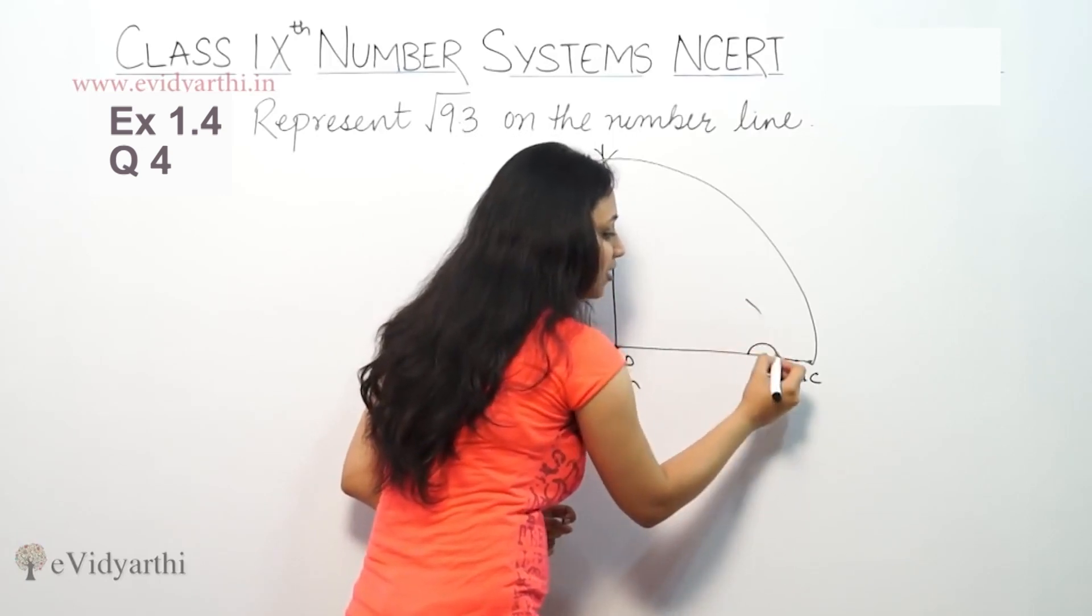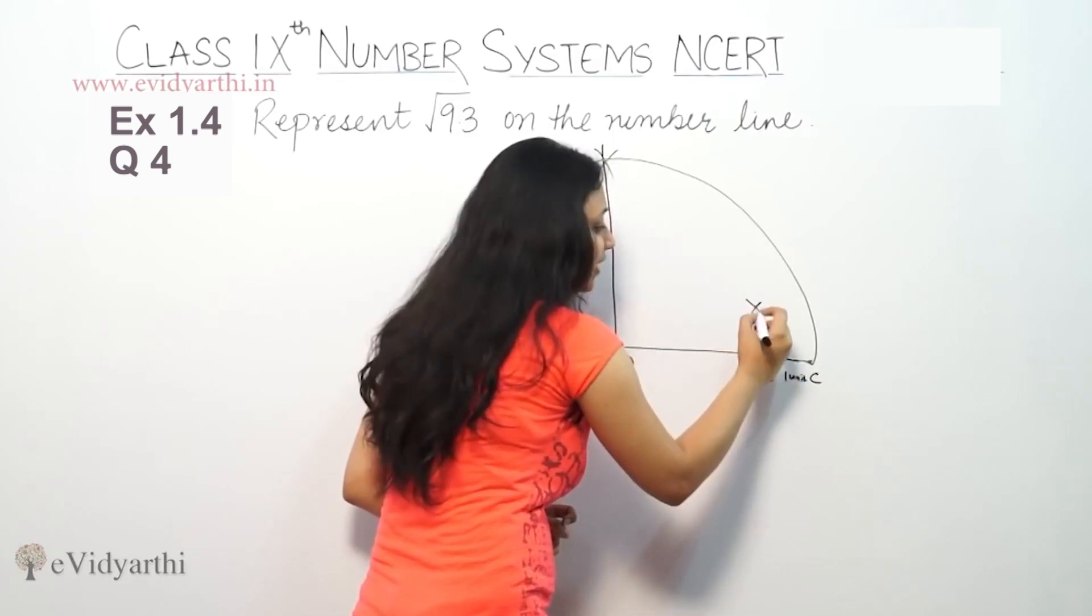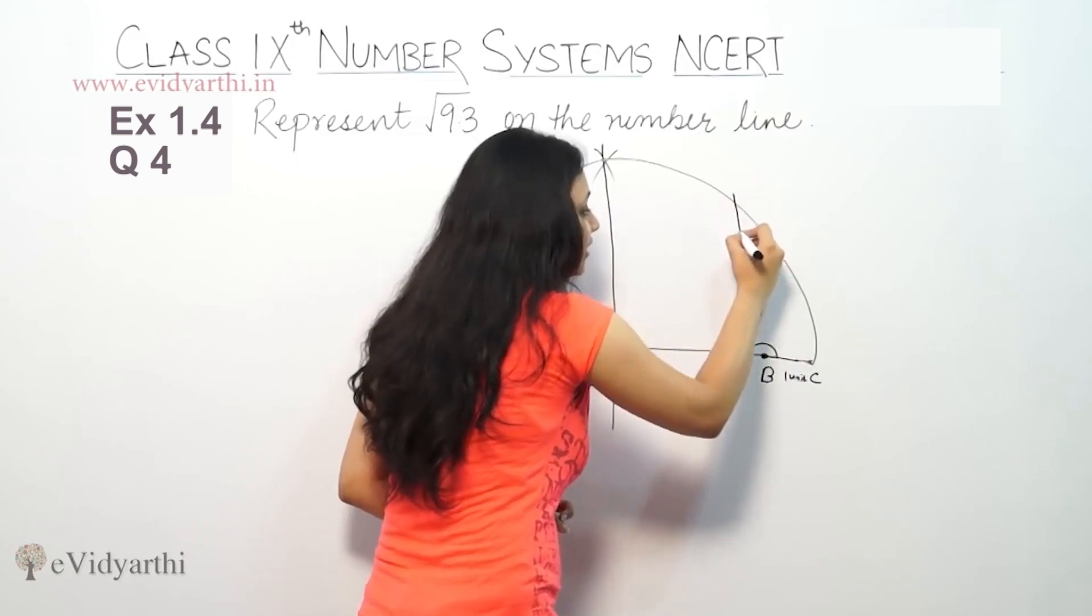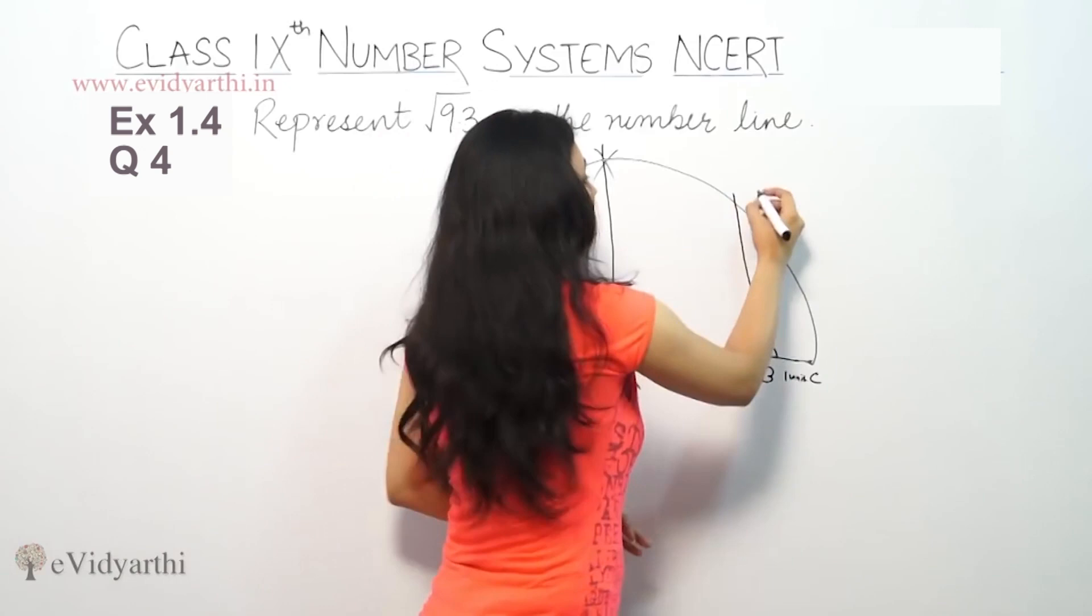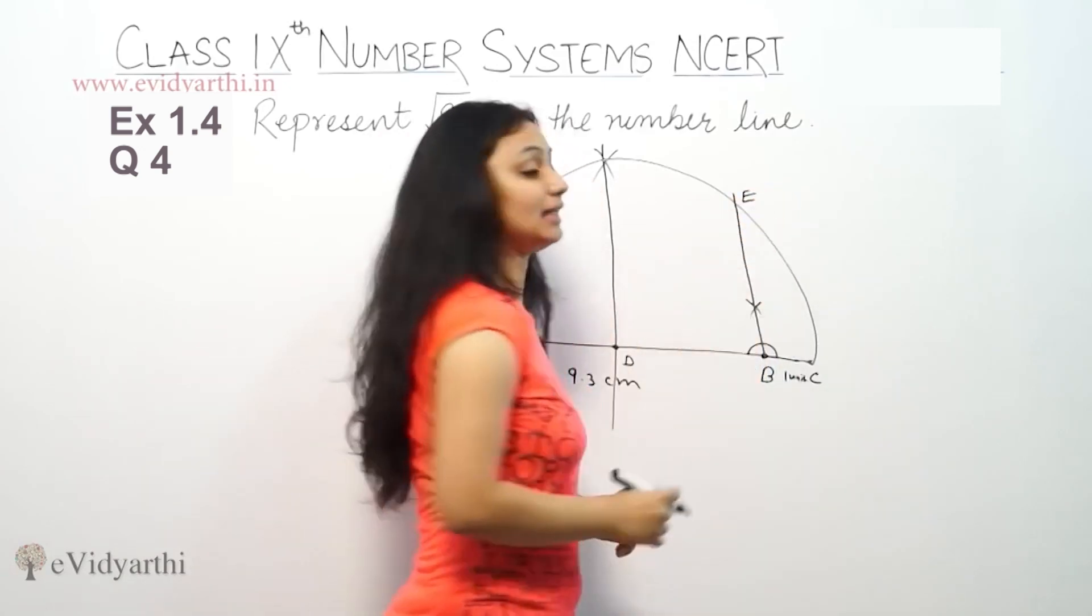Place the compass here once, it will cut here. Place the compass here once, cut here, and join the line from here. At which point this cuts, we will label that point E.